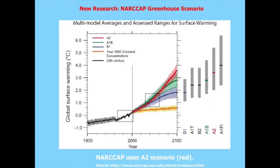For the NORCAP data, I'm looking at the A2 and 20th century simulations, which I call historical. This shows the greenhouse surface warming. The historical period runs from 1968 to 2000 — there's already a warming trend over that 33-year period. The A2 period runs from 2038 to 2070. We're evaluating all diagnostics — storm tracks, precipitation, and more — between the 20th century and A2.